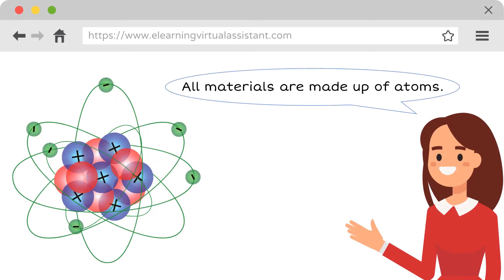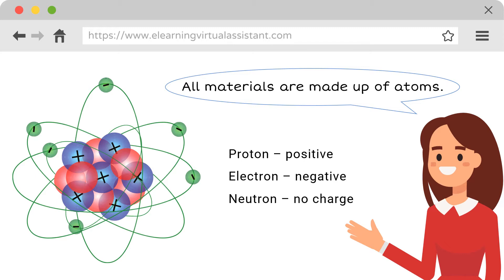All materials are made up of atoms. Atoms are made up of smaller building blocks: protons, electrons, and neutrons. A proton is a subatomic particle with positive electric charge, while an electron has a negative electric charge. A neutron is another subatomic particle with no charge.